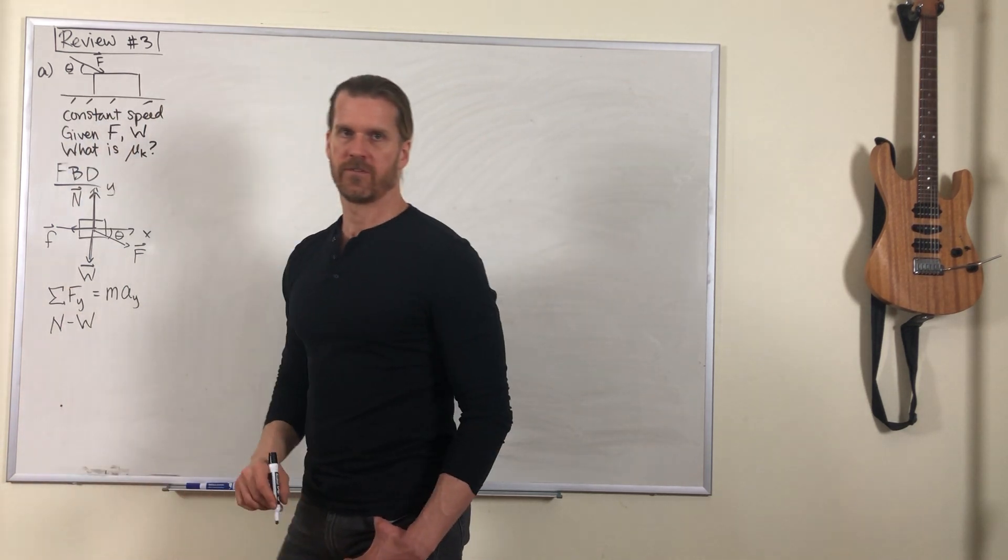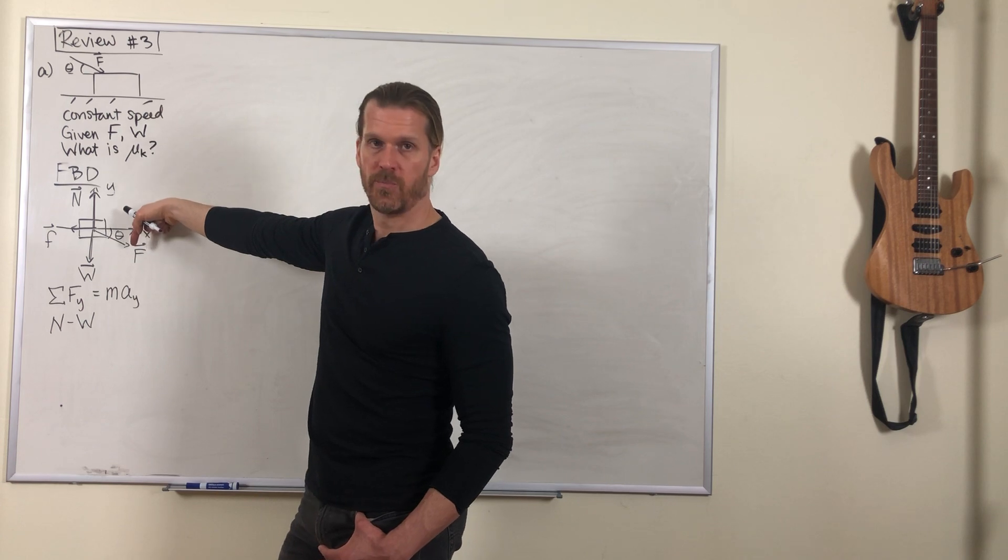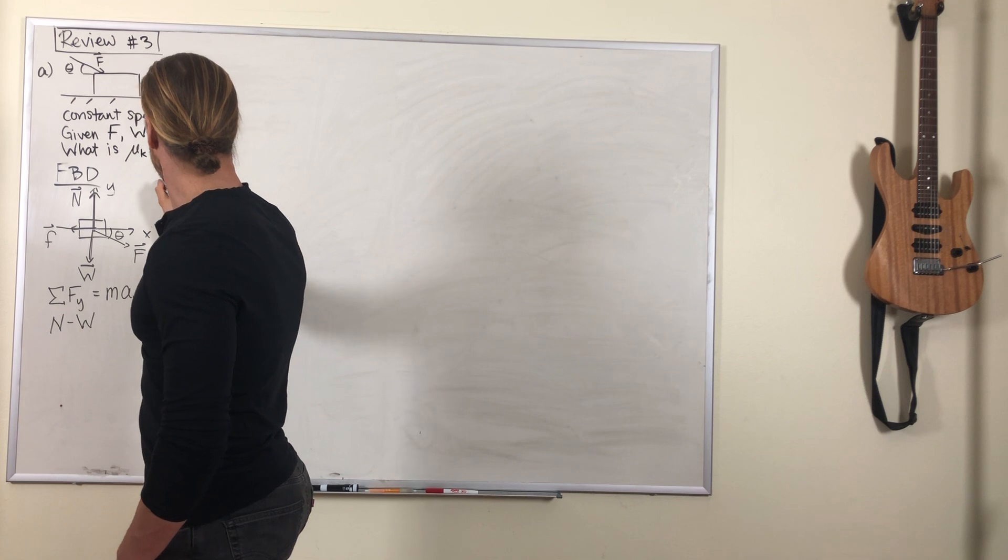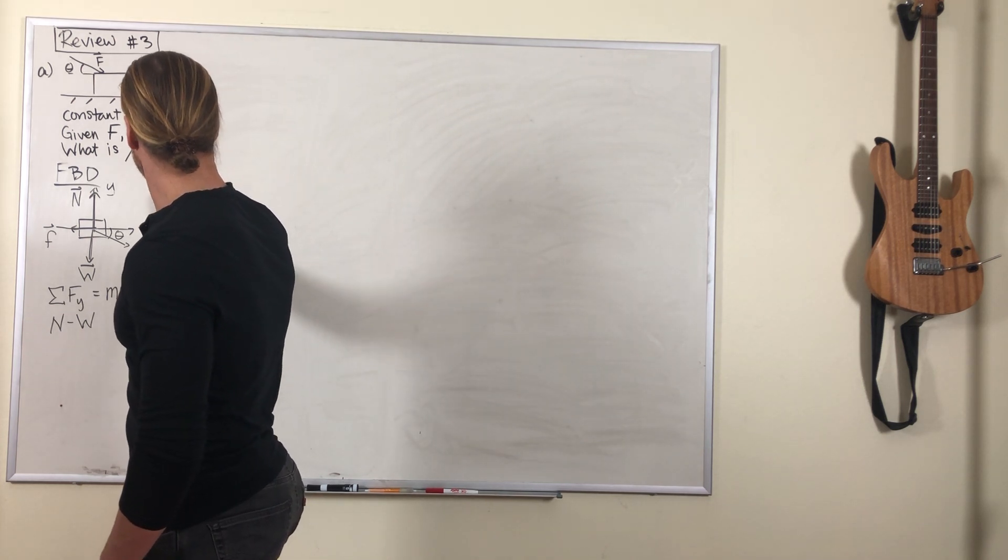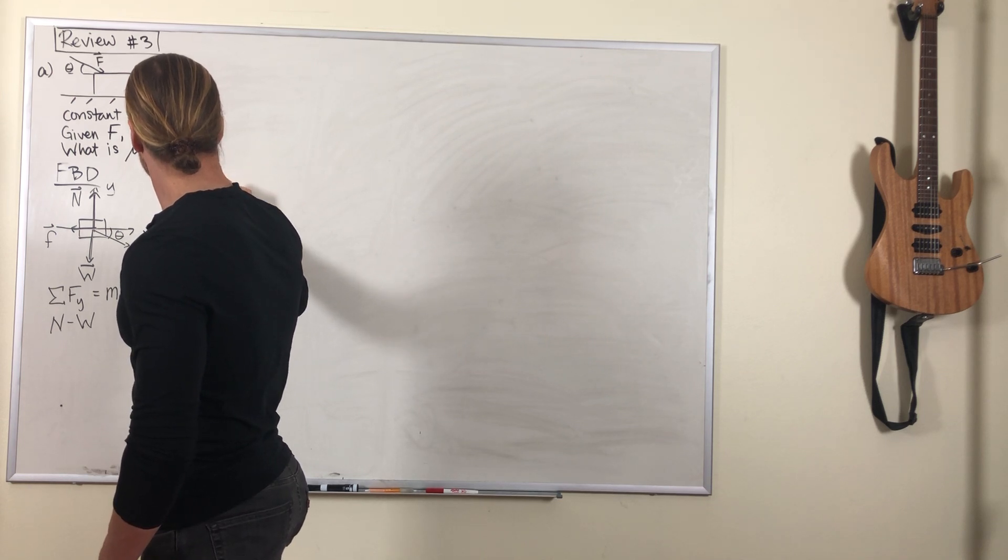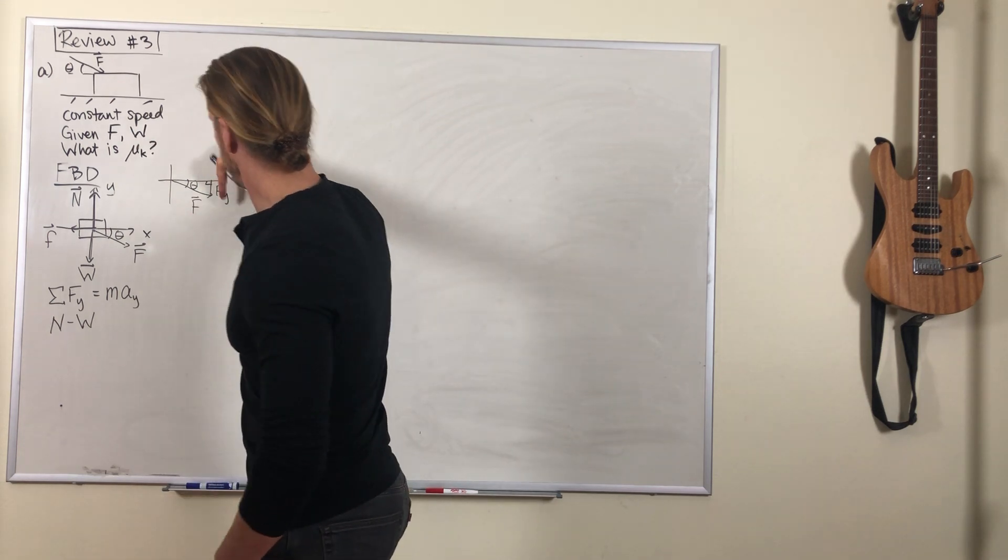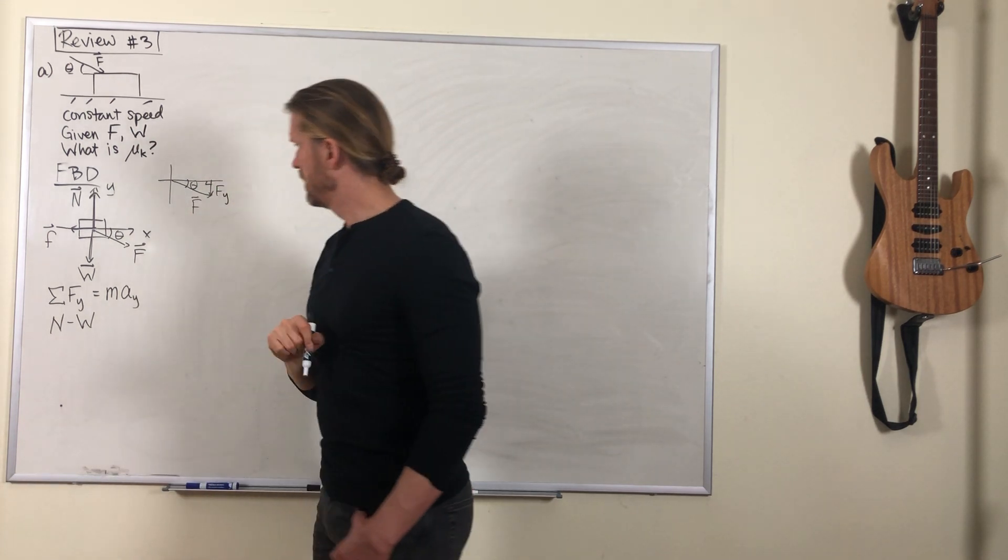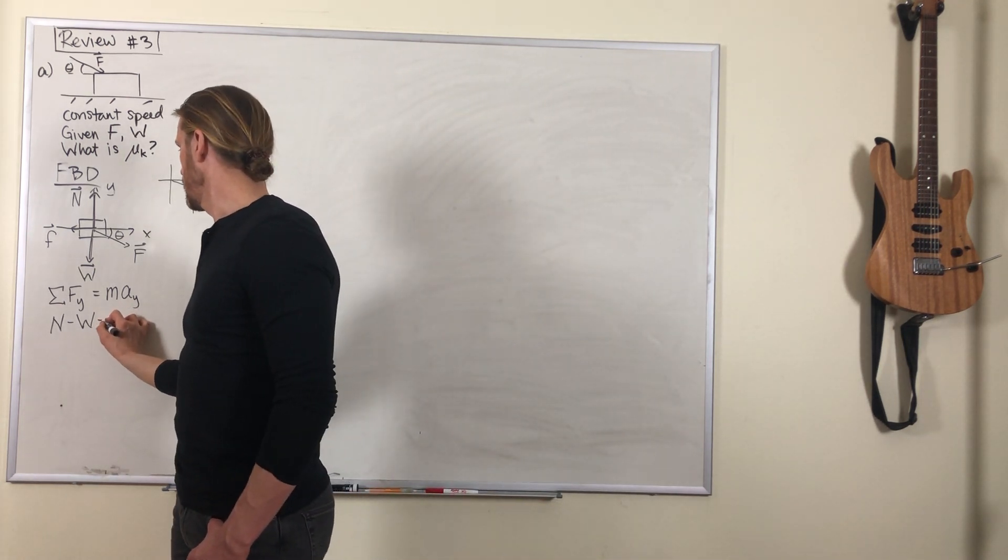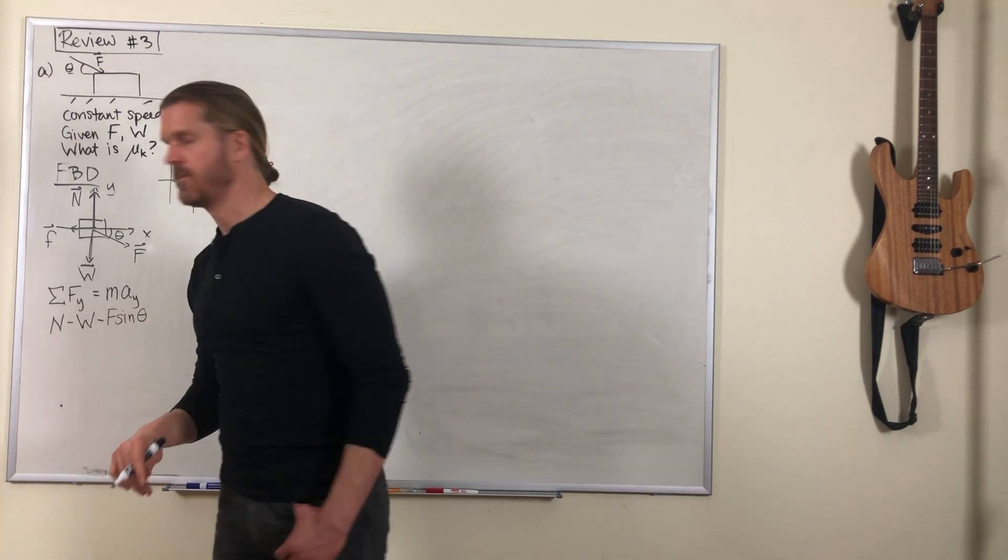So we've got the normal force in positive y, we have the gravity force or the weight in negative y, and we've got a downward component of that push. So if you look at that push force, I'll draw it out a little bigger. There's the push, there's the angle, it has a y component that goes down. That y component is opposite to the angle, so it's going to be F sine theta.